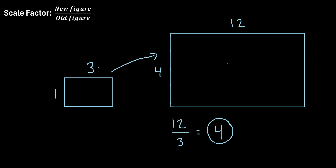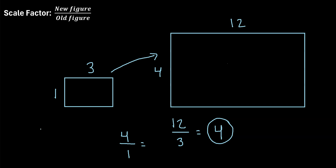In other words, we multiply the dimensions of the small rectangle by 4 to get the dimensions of the large rectangle. It doesn't matter which side we pick — if we had picked the side with a length of 4 and divided by the corresponding side of 1 on the small rectangle, that's also 4. As long as you pick the corresponding sides of each figure, you'll get the correct answer. A way to double-check yourself: when going from a small figure to a large figure, that's called an enlargement, and the scale factor will always be greater than 1. Our scale factor is 4, which is greater than 1.